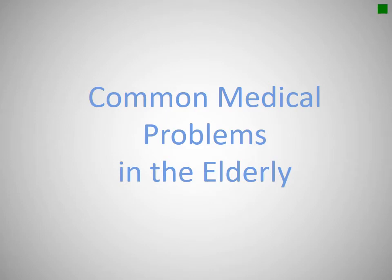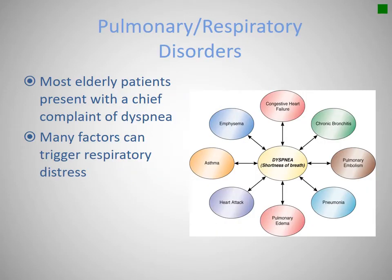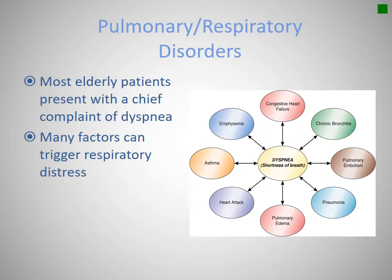Respiratory disorders are one of the most common diseases we see in the elderly, mainly because people didn't know it was bad to smoke when this generation was growing up, so they all smoked. COPD, chronic bronchitis, emphysema, and asthma are all very common. Environmental factors can trigger respiratory distress — when it gets cold out or the weather changes, everybody with COPD gets sick. Also worth noting: congestive heart failure, pulmonary embolism — which is more common because clotting factors change with age — and pneumonia, which is much easier to contract as an elderly patient.